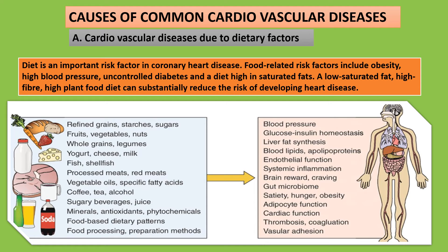Causes of common cardiovascular diseases. First, cardiovascular diseases due to dietary factors. Diet is an important risk factor in coronary heart disease. Food-related risk factors include obesity, high blood pressure, uncontrolled diabetes, and a diet high in saturated fats. A low saturated fat, high fiber, high plant food diet can substantially reduce the risk of developing heart disease. I have also provided a chart showing how harmful diet plans affect blood pressure through to vascular adhesion.